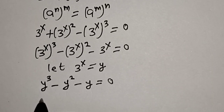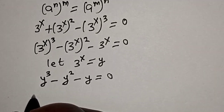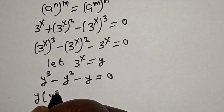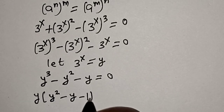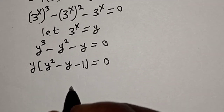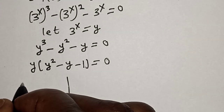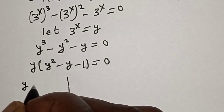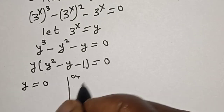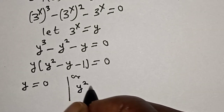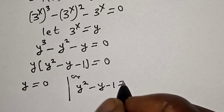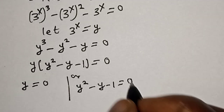Then we have y cubed minus y squared minus y is equal to 0. So y is common — let's factor y out. y times y squared minus y minus 1 is equal to 0. Here we have two cases: y is equal to 0, or y squared minus y minus 1 is equal to 0.